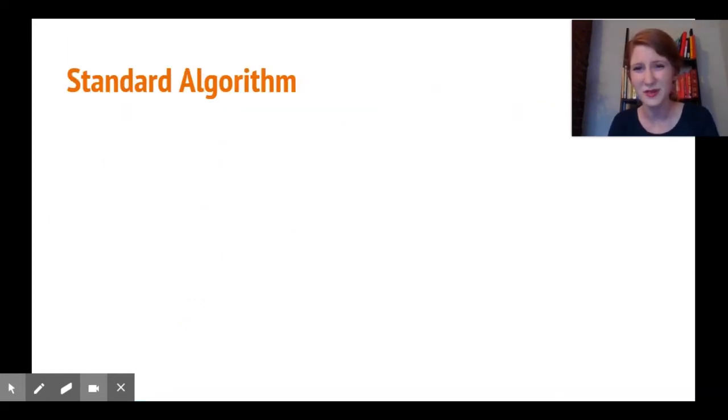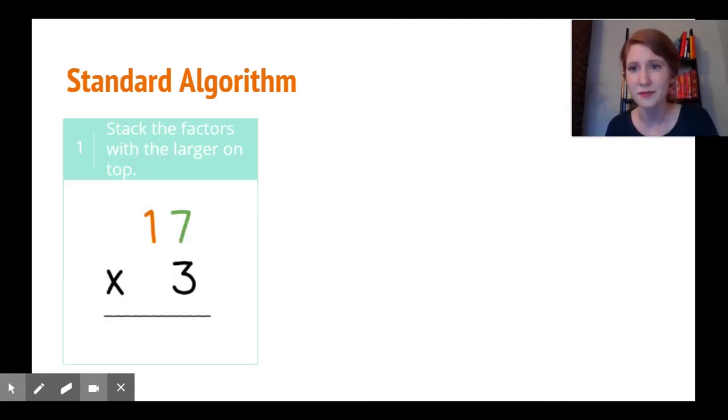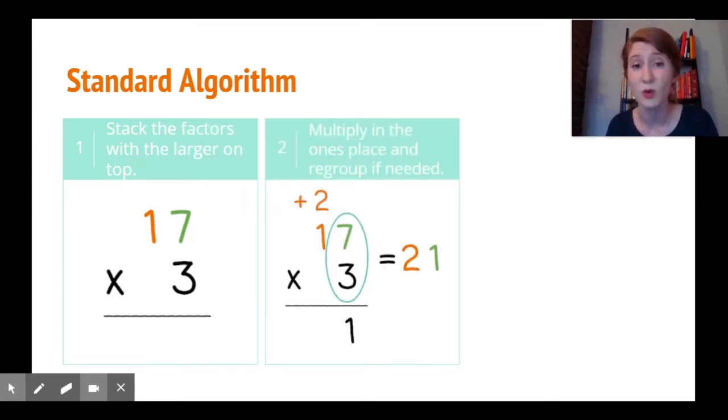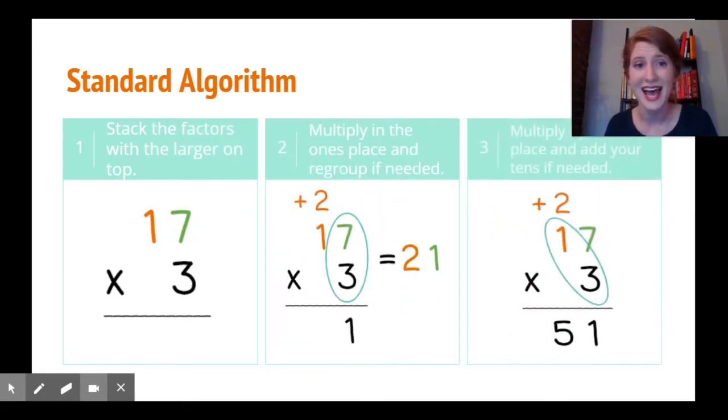What did we just do when we're multiplying with the standard algorithm? First we stack the factors with the larger one on top. Then we multiply in the ones place and we regroup if we need to. And last, we multiply in the tens place and add our extra tens.